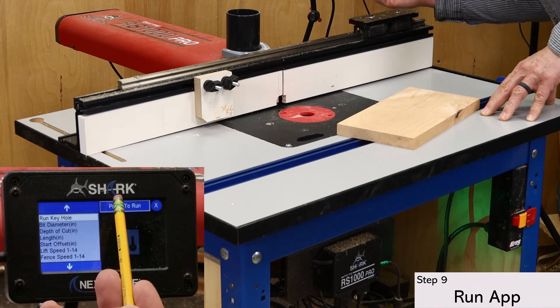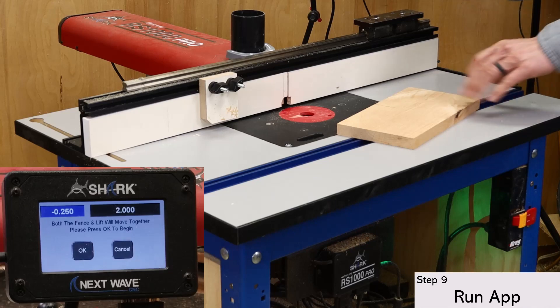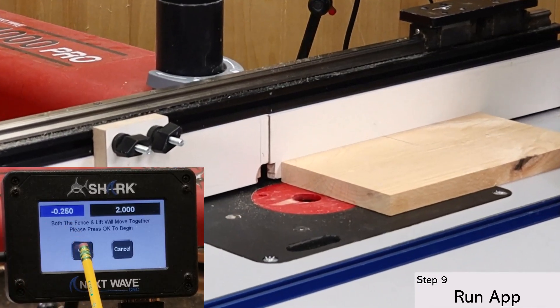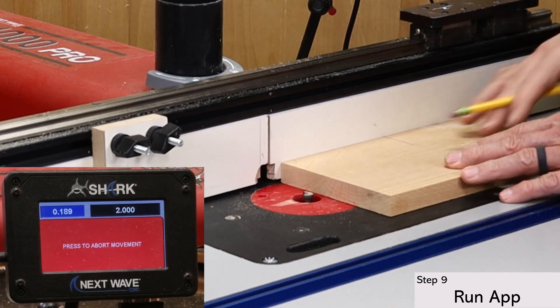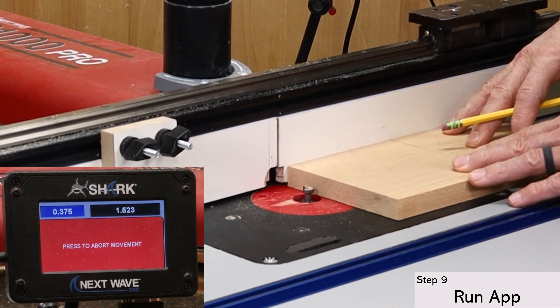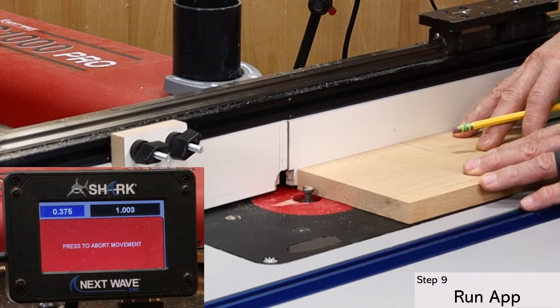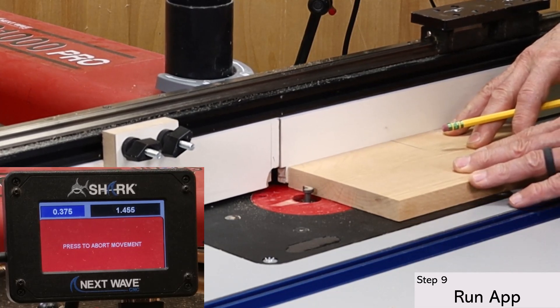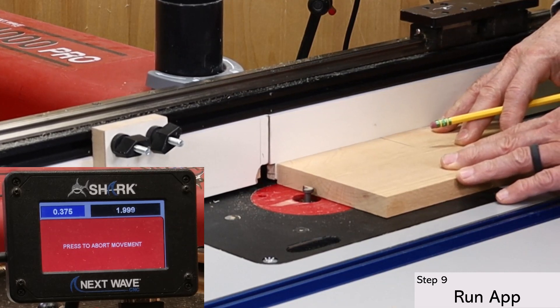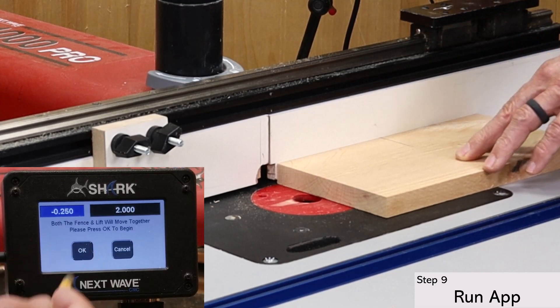The first time through, it's a good idea to run an air cut to verify that the movement looks correct. The bit moves up first, and then the fence pushes the board forward to cut the slot. And then the fence retracts. And then the bit drops down out of the way. Looks good, so now I can proceed to my actual project.